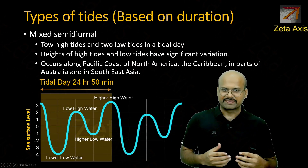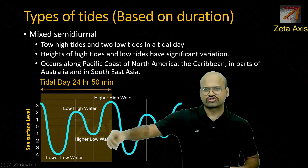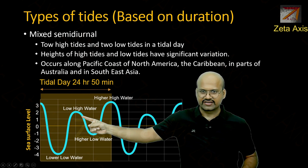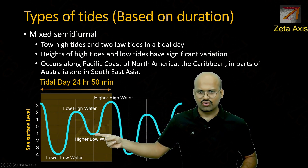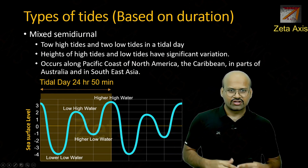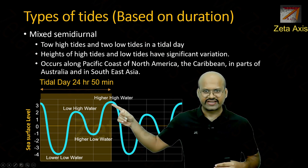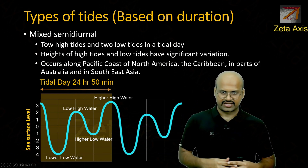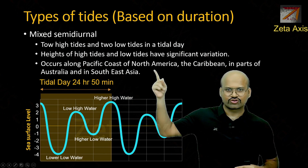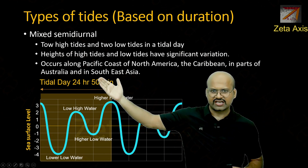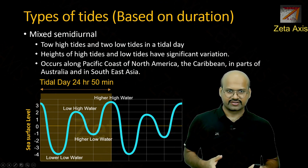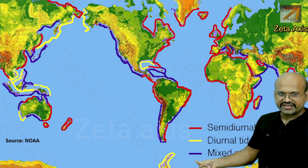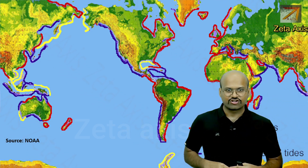The third type is mixed semi-diurnal tide. Like semi-diurnal tides, these also have two high tides and two low tides in a single tidal day, but the difference is that the heights of the two high tides vary a lot, and there is also a large gap between the two low tides. These tides occur on the Pacific coast of North America, in the Caribbean, parts of Australia, and South Asia. They are also common, indicated by violet on the map.